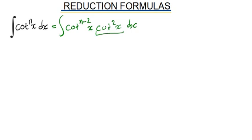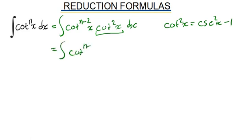I am going to express this part in terms of the identity that has to do with cotangent squared of x. I am going to say cotangent²(x) is simply equal to cosecant²(x) minus 1. So what I will have is cotangent^(n-2)(x) times open bracket cosecant²(x) minus 1, dx.